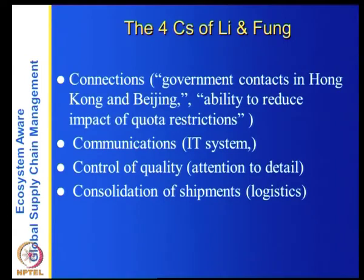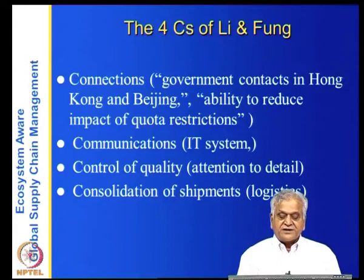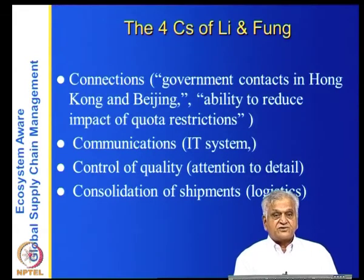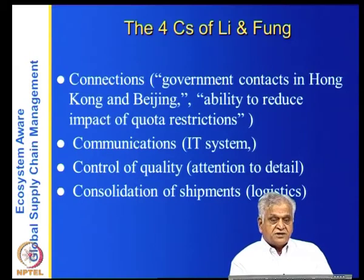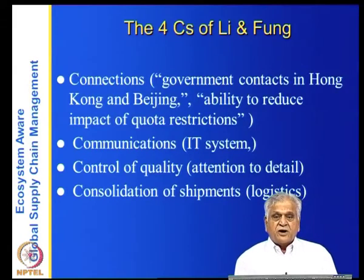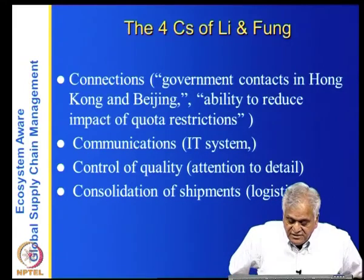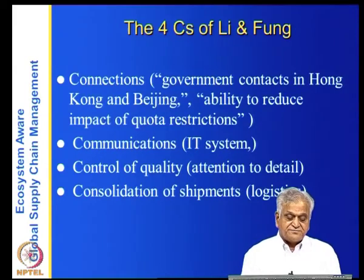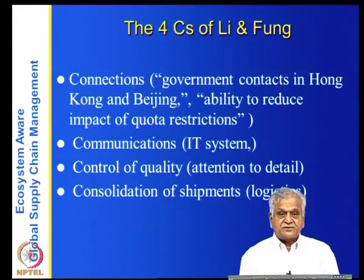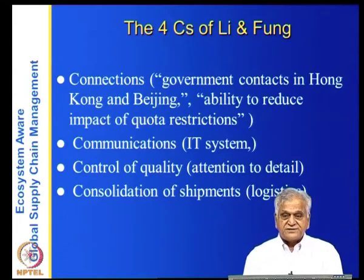Connections — one of the key takeaways from the Li and Fung case is how important connections are. Government contacts in Hong Kong and Beijing give the ability to reduce the impact of quota restrictions. Communications — when you have 8,000 suppliers across 40 countries and want to monitor what is happening at all factories and across logistics in various trucks and ships, a robust communication system is essential. Control of quality involves attention to detail and consolidation of shipments.